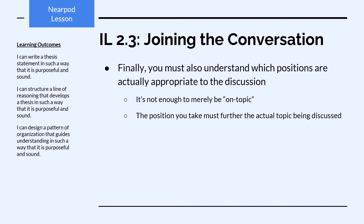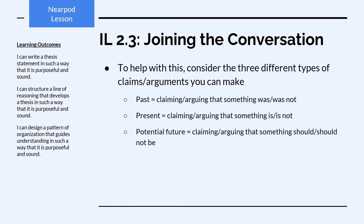Finally, it's important to understand which positions are actually appropriate to the discussion. It's not enough for your position to merely be on topic — the position you take must further the actual topic being discussed in a meaningful way, within the parameters set by the discussion. To help understand what is and is not an appropriate position, consider the three different types of claims or arguments you can make.